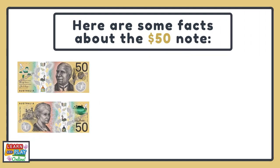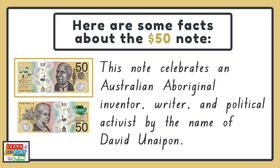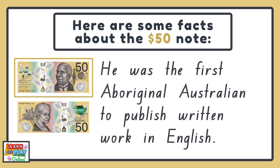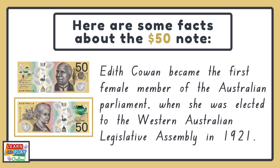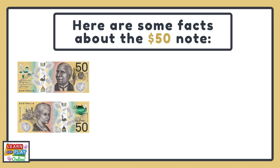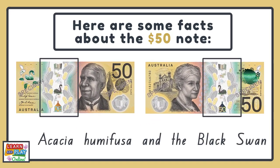Here are some facts about the $50 note. This note celebrates an Australian Aboriginal inventor, writer, and political activist by the name of David Unaipon. He was the first Aboriginal Australian to publish written work in English. The other side of the $50 note depicts Edith Cowan. She was a significant figure who helped to shape the rights of women and children in Australia today. Edith Cowan became the first female member of the Australian Parliament when she was elected to the Western Australian Legislative Assembly in 1921. The native wattle and bird featured on this note is the acacia humifusa and the black swan.